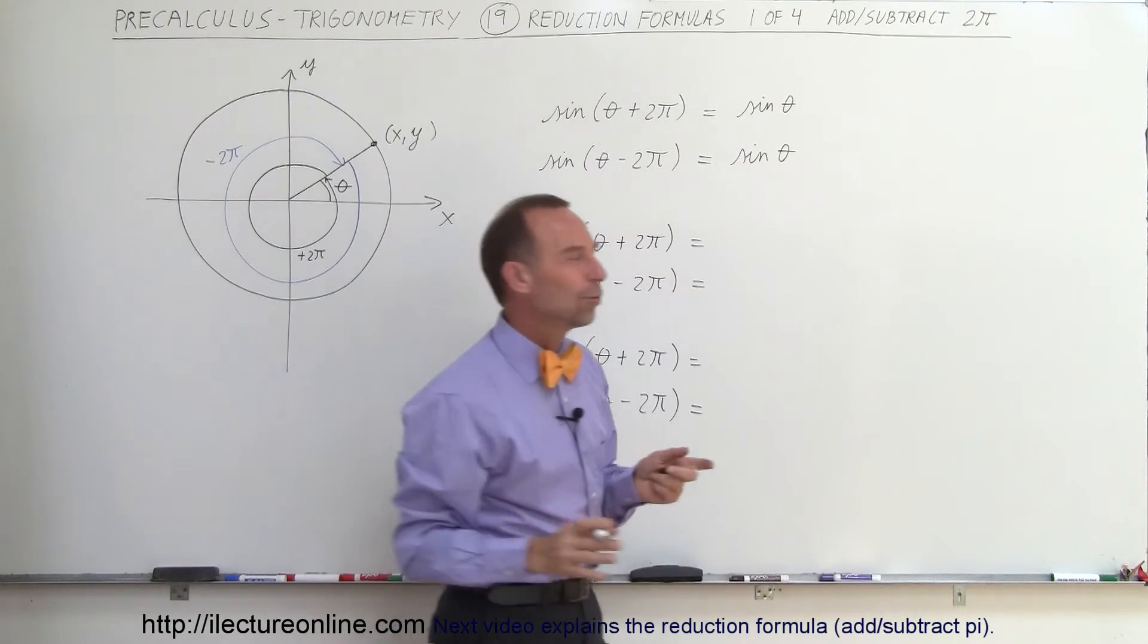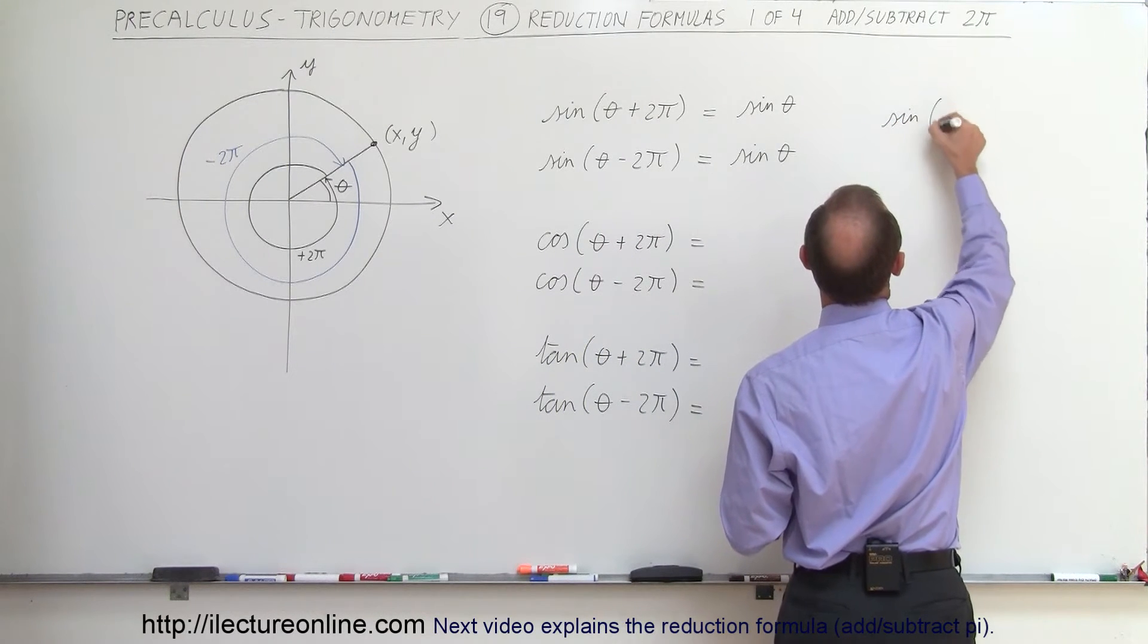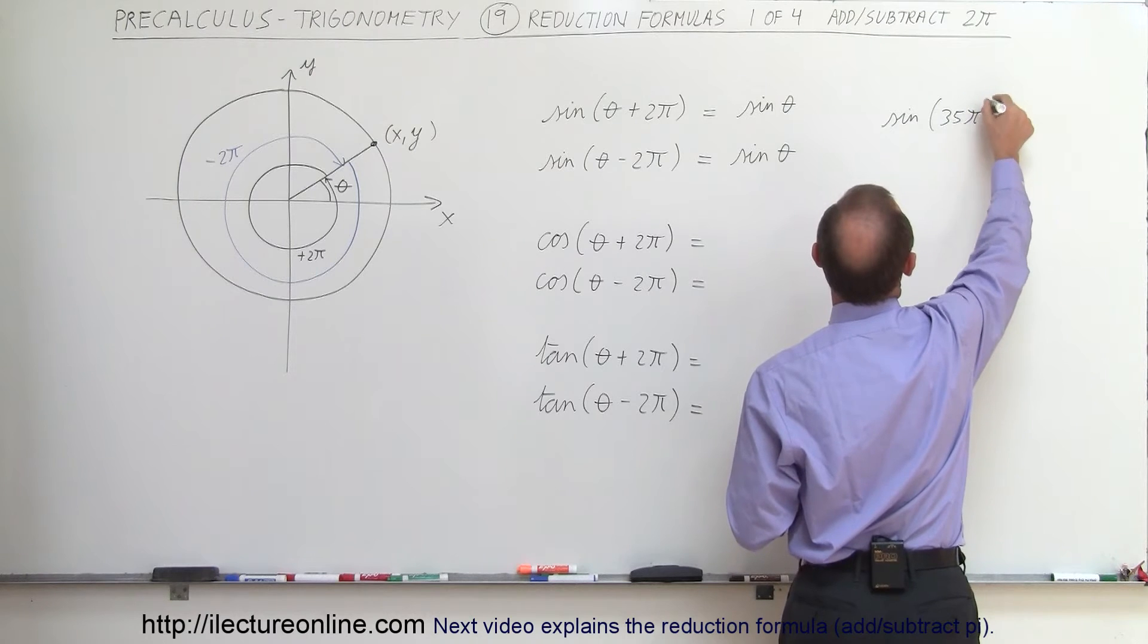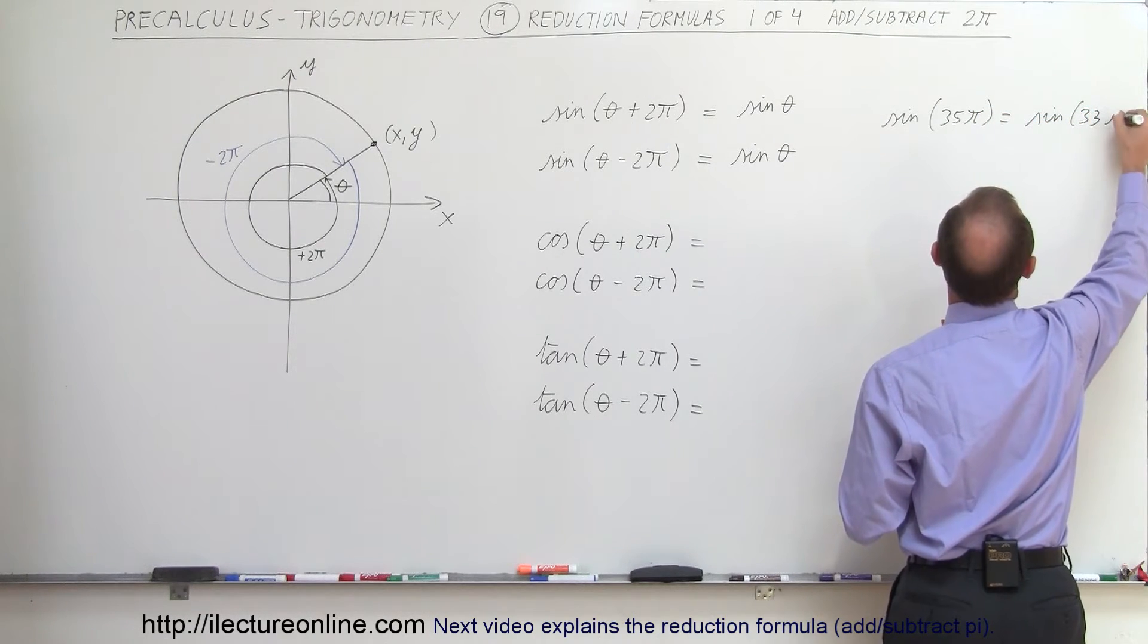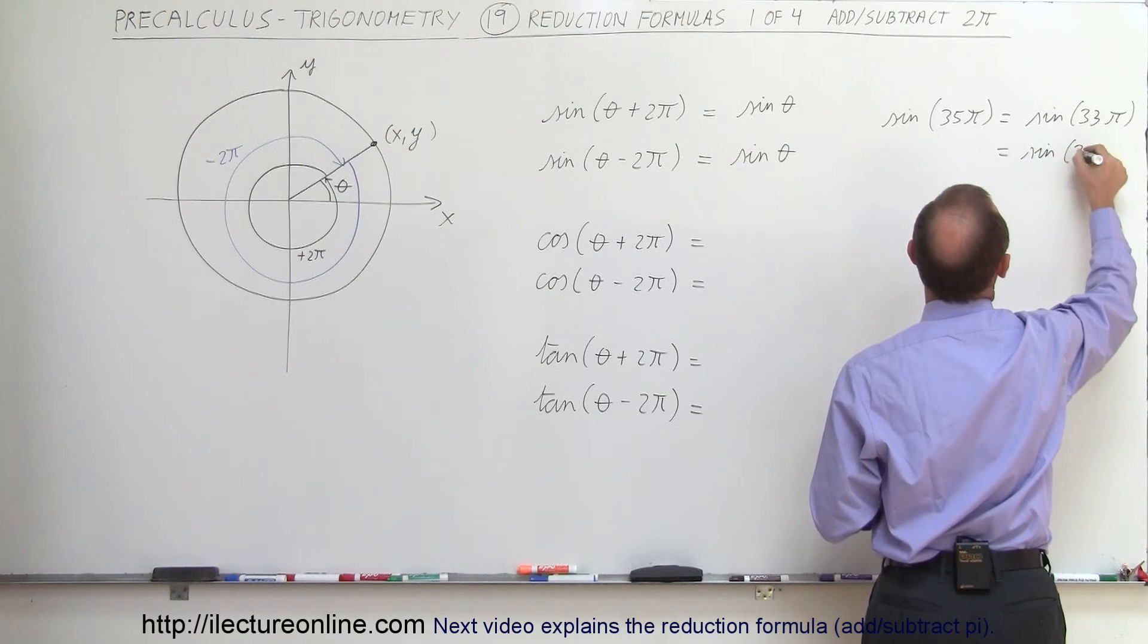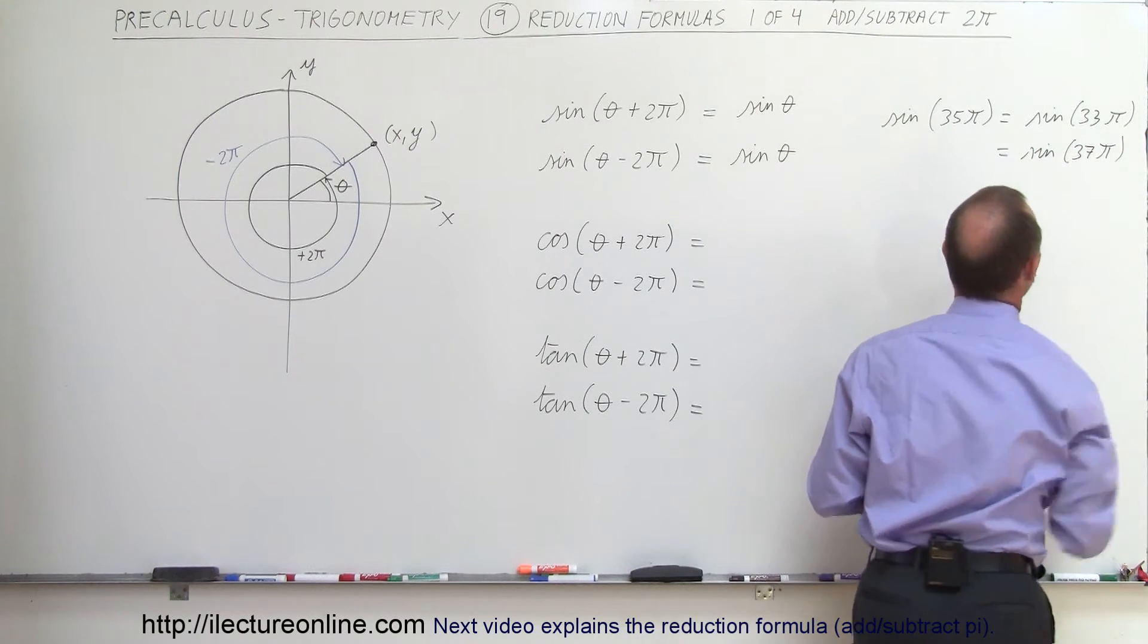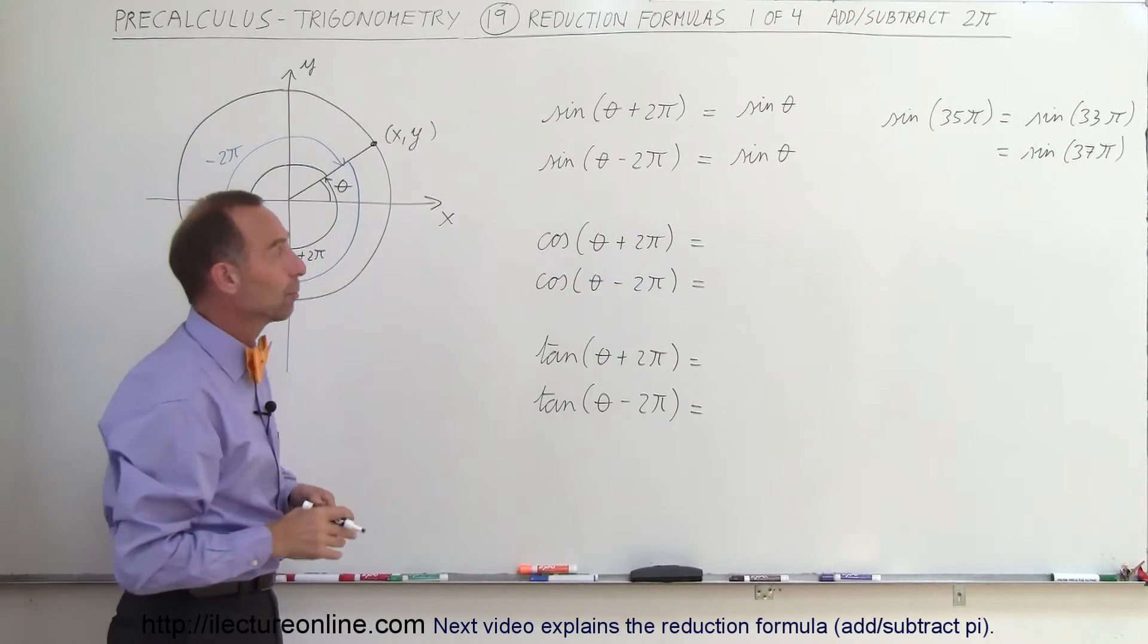In other words, to give you an example, the sine of 35π is equal to the sine of 33π. I can subtract; I can add. This is the same as the sine of 37π. I can always subtract or add 2π from any angle and get the exact same result.